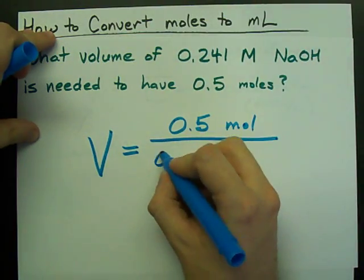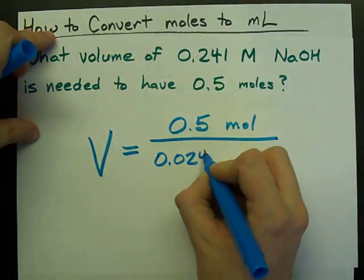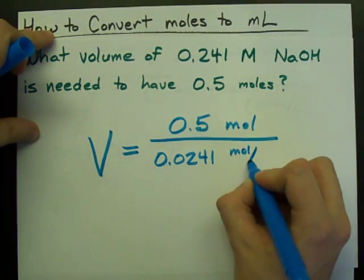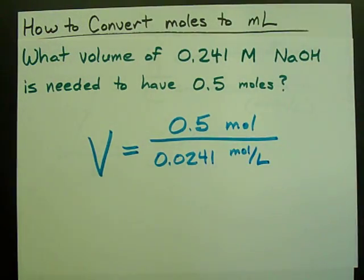and dividing it by the concentration, 0.0241 moles per liter. That's what this capital M means.